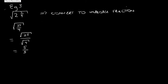Now let's look at example 3. We need to find the square root of 2 and 7 over 9. The first thing we need to do is convert this into an improper fraction, making it 25 over 9. Then we split it into the square root of 25 over the square root of 9.